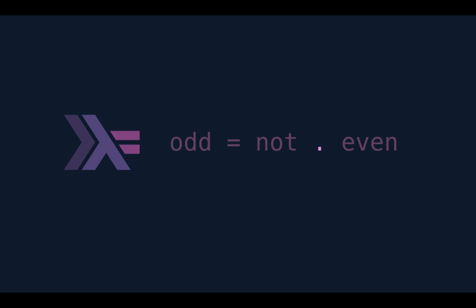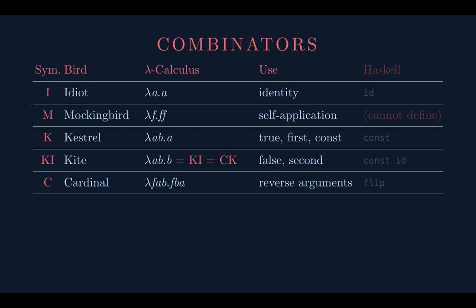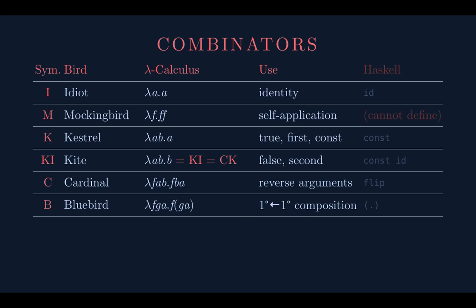In Haskell this is built in — it's that little dot. Odd in Haskell is just 'not even' — that's great. The Bluebird is unary-to-unary composition going right to left. It's a period in Haskell; you can section it and turn it into the B combinator in prefix notation with parentheses. Infix notation is more pleasant for function composition.